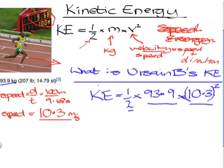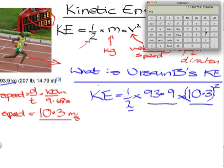So let's just go through that. Let's put our calculator back, let's clear that. We've got 1/2 times 93.9, that's the mass, multiplied by, and now we're going to take 10.3, and we're going to square that.